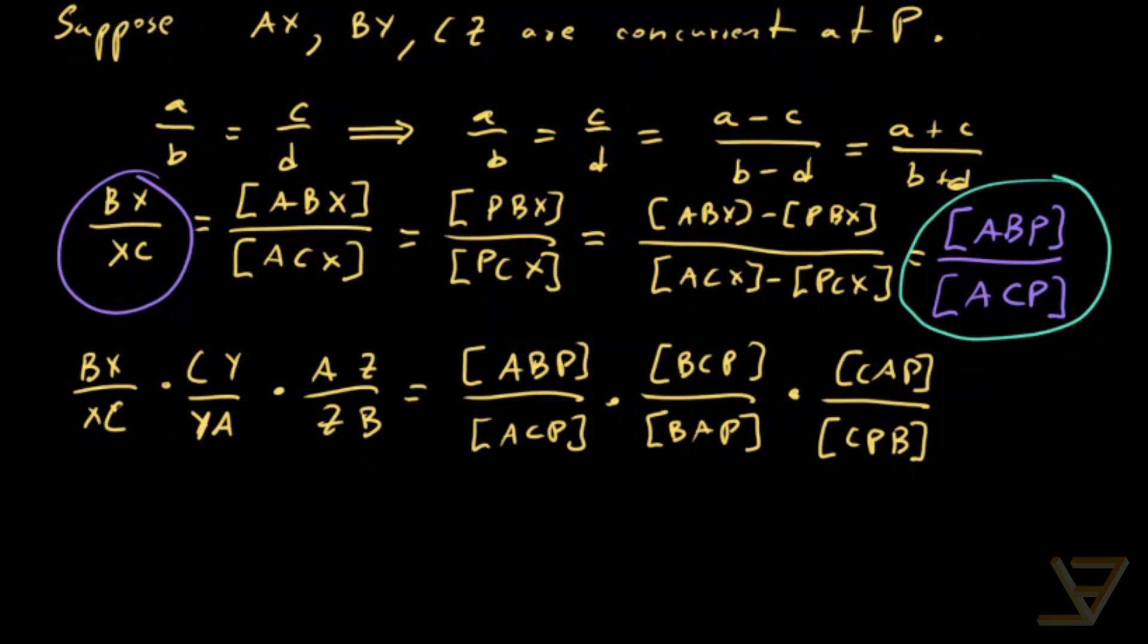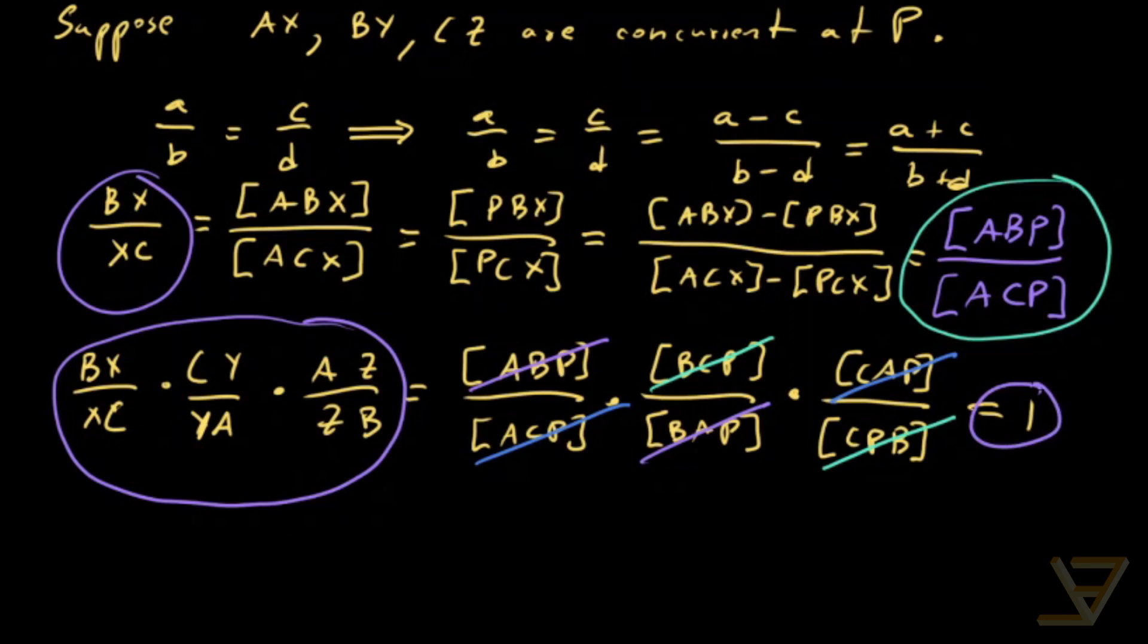We get that ABP and BAP cancel out. We get that BCP and CPB cancel out. And we get that CAP and ACP cancel out. So in the end we're just left with one. That's a pretty amazing criterion that this quantity over here, this product of ratios, is equal to 1.